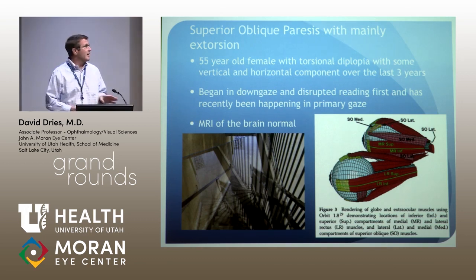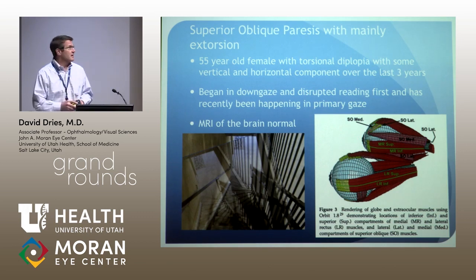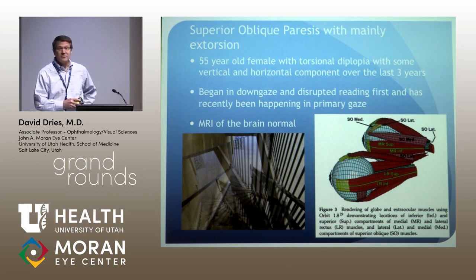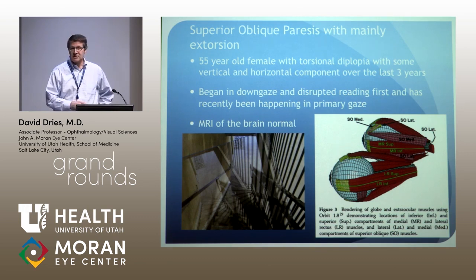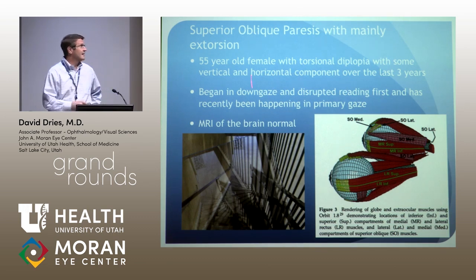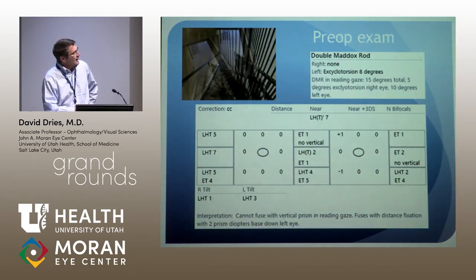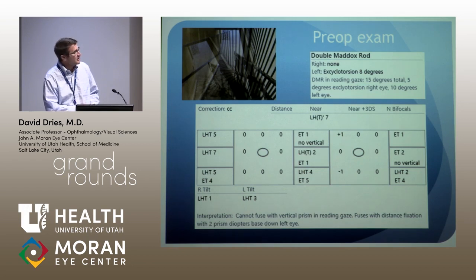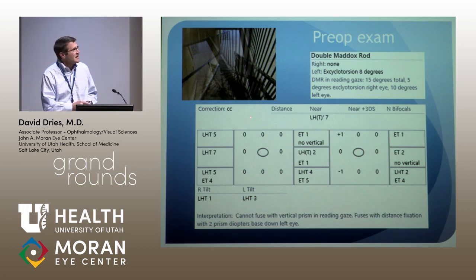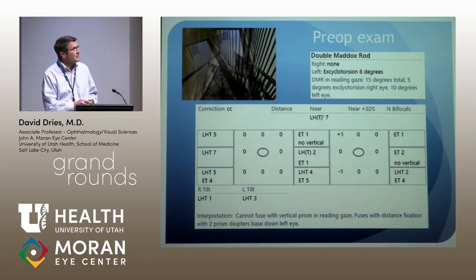So what does this mean clinically? What's it like to have torsional diplopia? This is a 55-year-old photographer who supplied a photoshopped photo illustrating what it's like to walk downstairs in an apartment complex. In this diagram you can see the compartments of the muscle: there is a lateral compartment and a medial compartment of the superior oblique. The lateral compartment's tendons insert on the posterior fibers of the tendon, while the medial compartment inserts on the more equatorial anterior fibers.